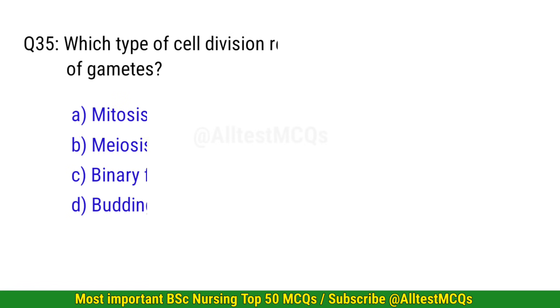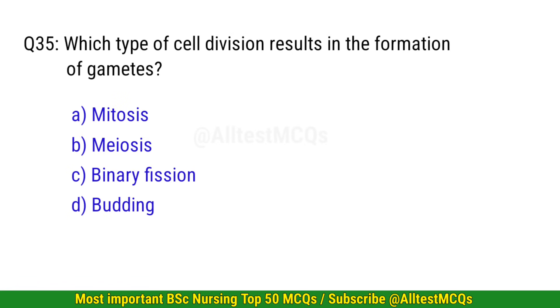Question 35. Which type of cell division results in the formation of gametes? The correct answer is B: Meiosis.